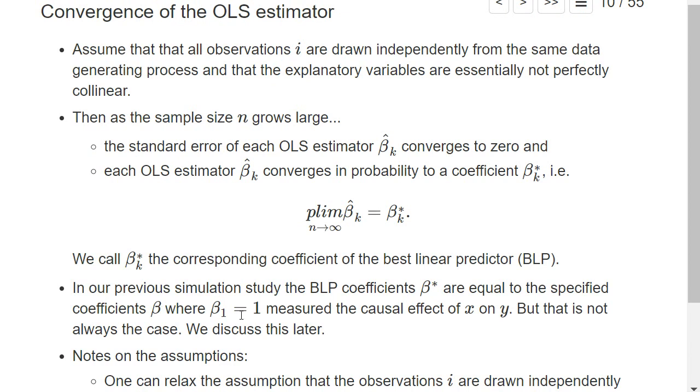So beta_1 measured the causal effect of x on y. However, it's not always true that these beta stars, the coefficients of the best linear predictors against which the OLS estimator converges, are equal to this causal effect. And it's important to understand when they converge against coefficients that measure the causal effect and when these coefficients of the best linear predictors are different coefficients, to understand what an OLS estimator actually estimates. We will discuss this in much more detail later.